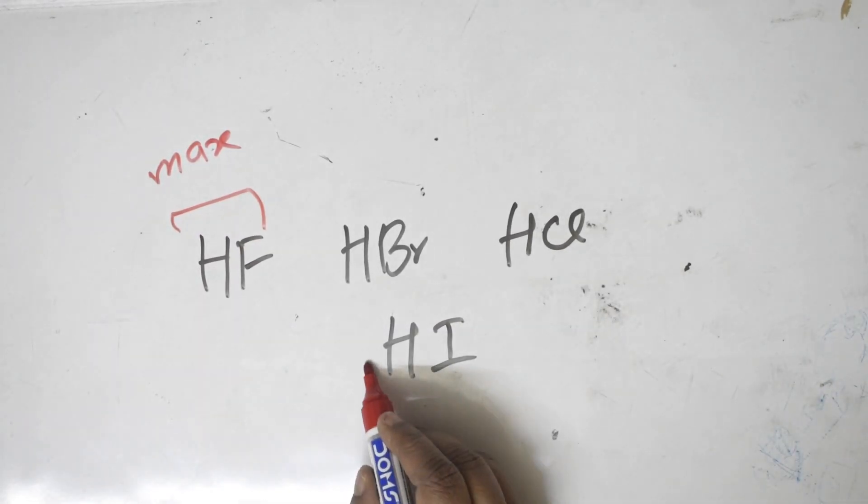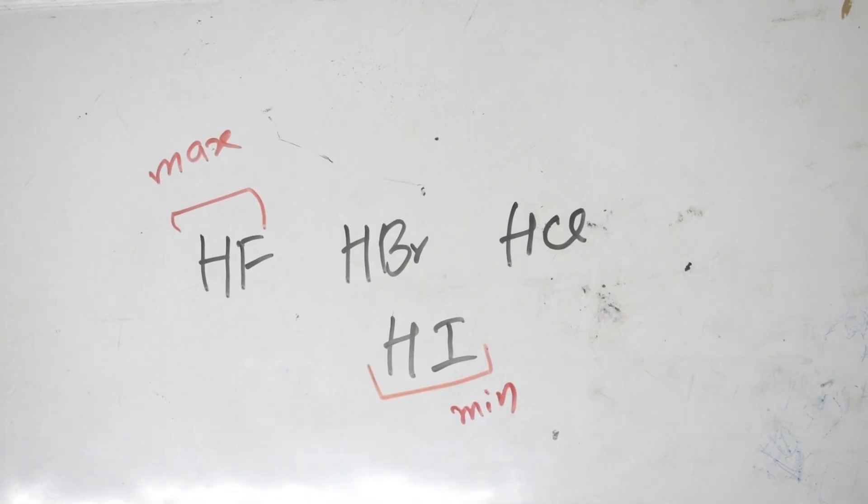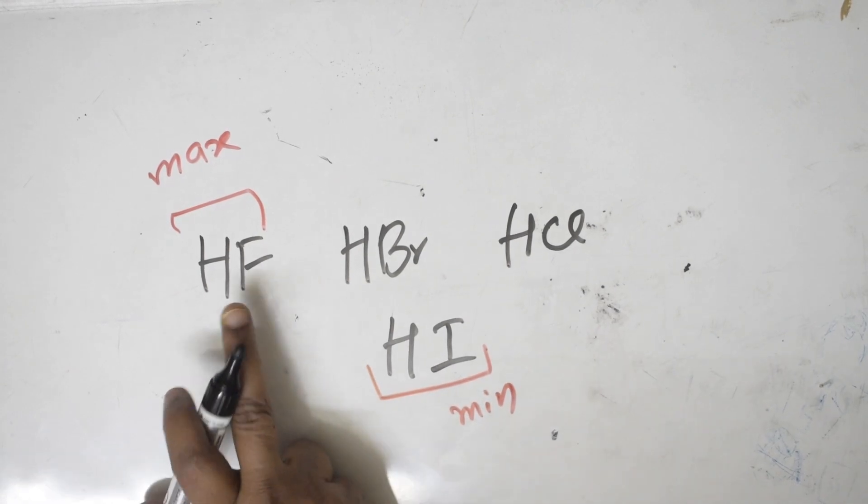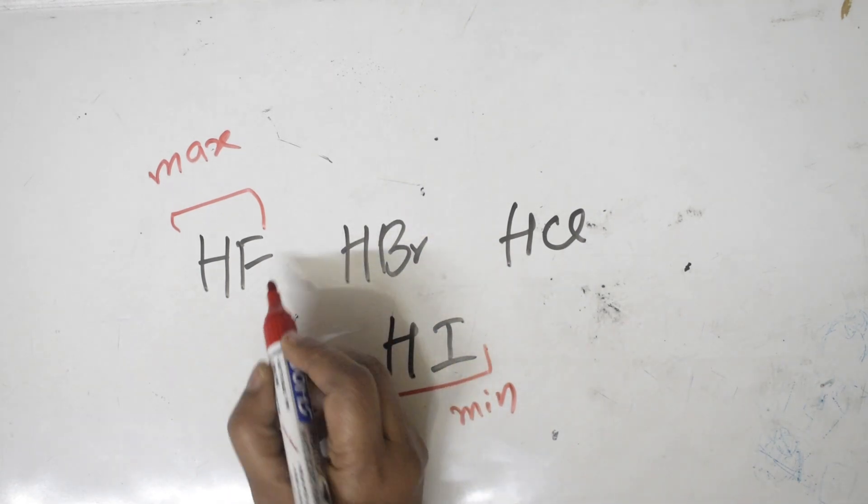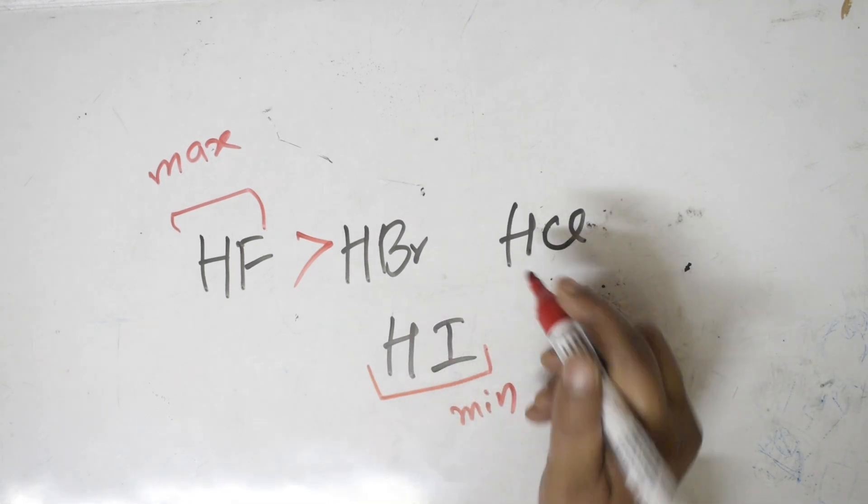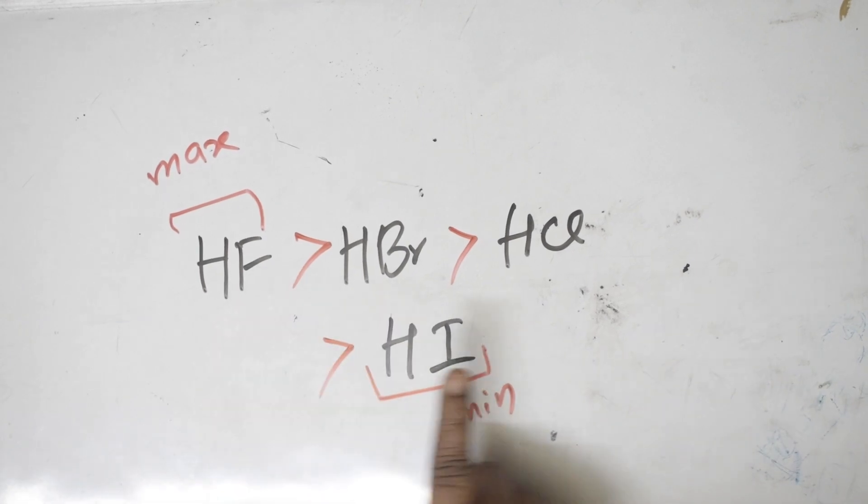Correct. The electronegativity difference between iodine and hydrogen is minimum. So what did I say just now? If the electronegativity difference is maximum, this will have more dipole. Now let us write the order. It is HF has more dipole moment compared to HCl, more than HI. That means if I have to see the overall order, HF is maximum, HI is minimum.